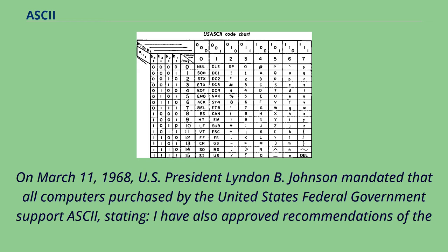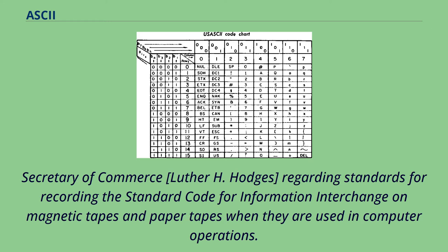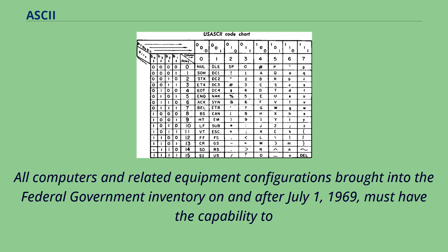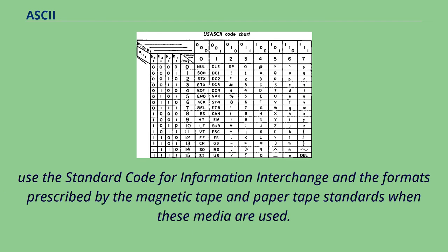On March 11, 1968, U.S. President Lyndon B. Johnson mandated that all computers purchased by the United States federal government support ASCII, stating: 'I have also approved recommendations of the Secretary of Commerce, Luther H. Hodges, regarding standards for recording the standard code for information interchange on magnetic tapes and paper tapes when they are used in computer operations. All computers and related equipment configurations brought into the federal government inventory on and after July 1, 1969, must have the capability to use the standard code for information interchange and the formats prescribed by the magnetic tape and paper tape standards when these media are used.'